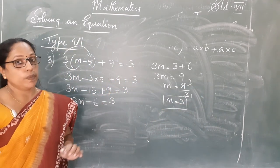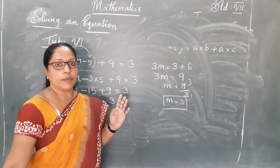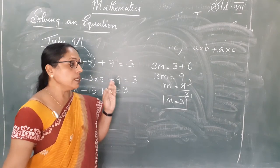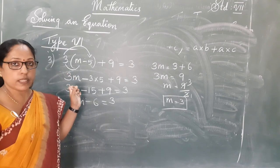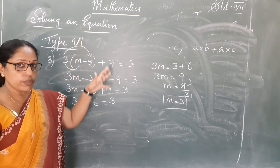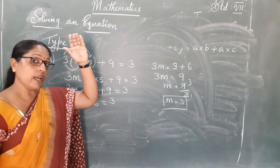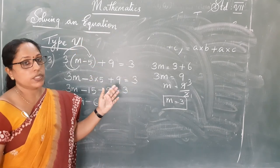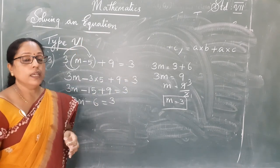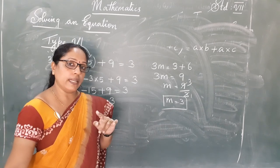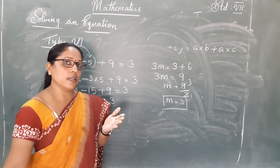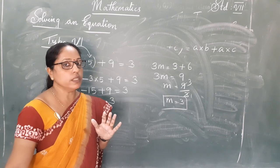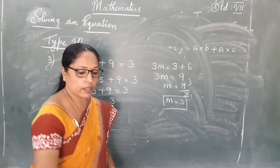So I have explained all the types of equations: type 1, type 2, type 3, type 4, type 5, and type 6. All students should write the notes neatly and learn the rules for each type. Homework will be given on Thursday, and group one will do the homework. Thank you.